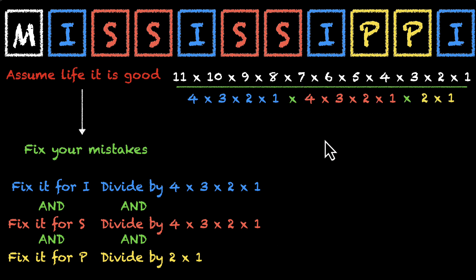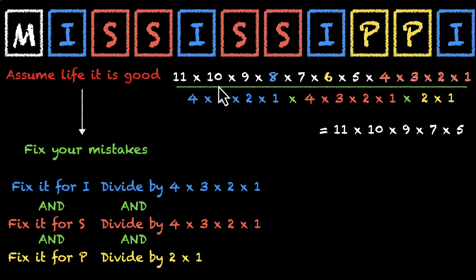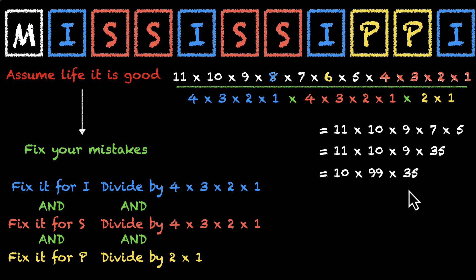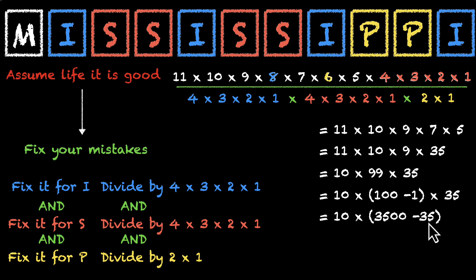There are many cancellations. The two sets of 4 × 3 × 2 × 1 cancel with parts of the numerator. After cancellation, we are left with 11 × 10 × 9 × 7 × 5 in the numerator. 7 × 5 = 35, and 11 × 9 = 99 = 100 − 1. So 35 × 99 = 3500 − 35 = 3465. Multiplied by 10 gives 34,650. There are 34,650 ways to arrange the letters of the word Mississippi.